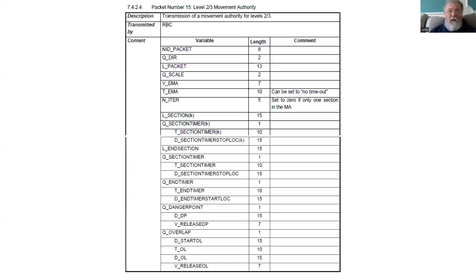And the key packet of information is the movement authority. If you look in Subset 26, Chapter 7, you'll find its structure like this.